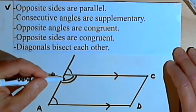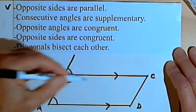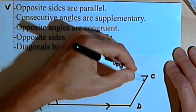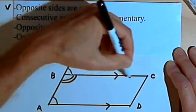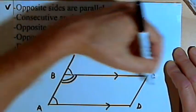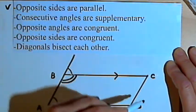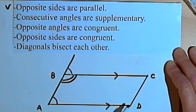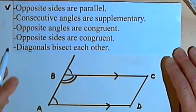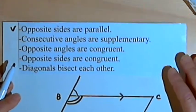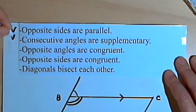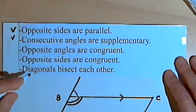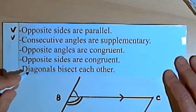In the same way we could prove that B and C are supplementary — we could extend side BC and prove that. Then we could go around and prove that C and D are supplementary, and then D and A are supplementary. So now we know that consecutive angles are supplementary.